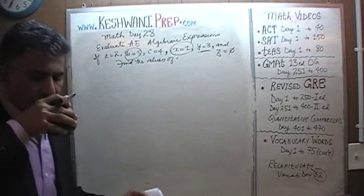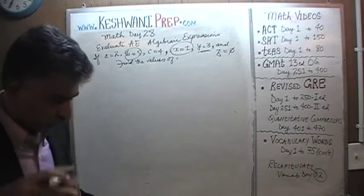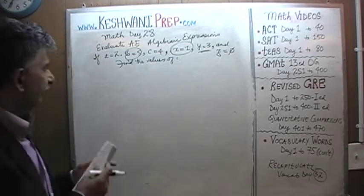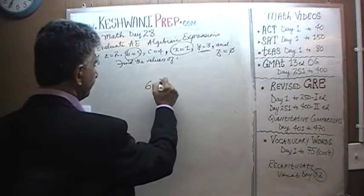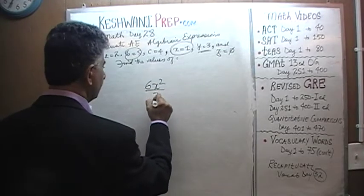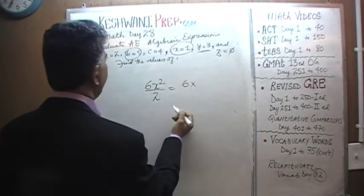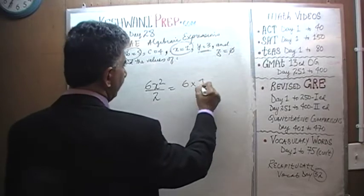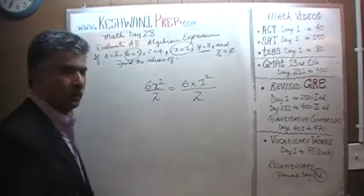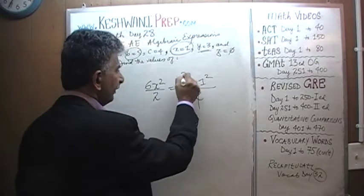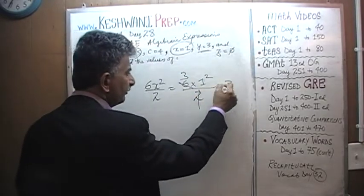Then we have 6X squared over 2. 6 times X squared. X is 1, so it's just 1 squared over 2. Divide top and bottom by 2. 6 becomes 3, and it's just 3 times 1 squared, which is 3.